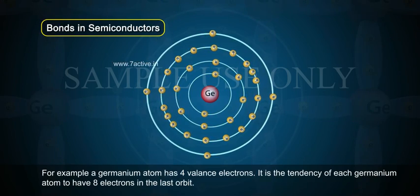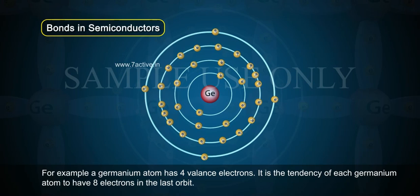For example, a germanium atom has 4 valence electrons. It is the tendency of each germanium atom to have 8 electrons in the last orbit.